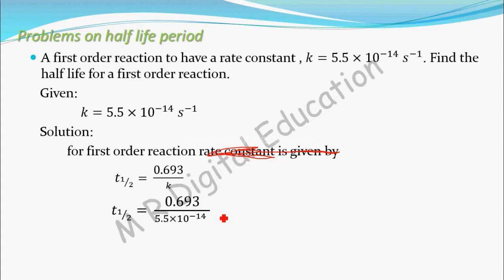When you simplify this, when you divide 0.693 by 5.5 times 10 to the power minus 14, you will get time as 1.26 times 10 to the power minus 13 seconds.